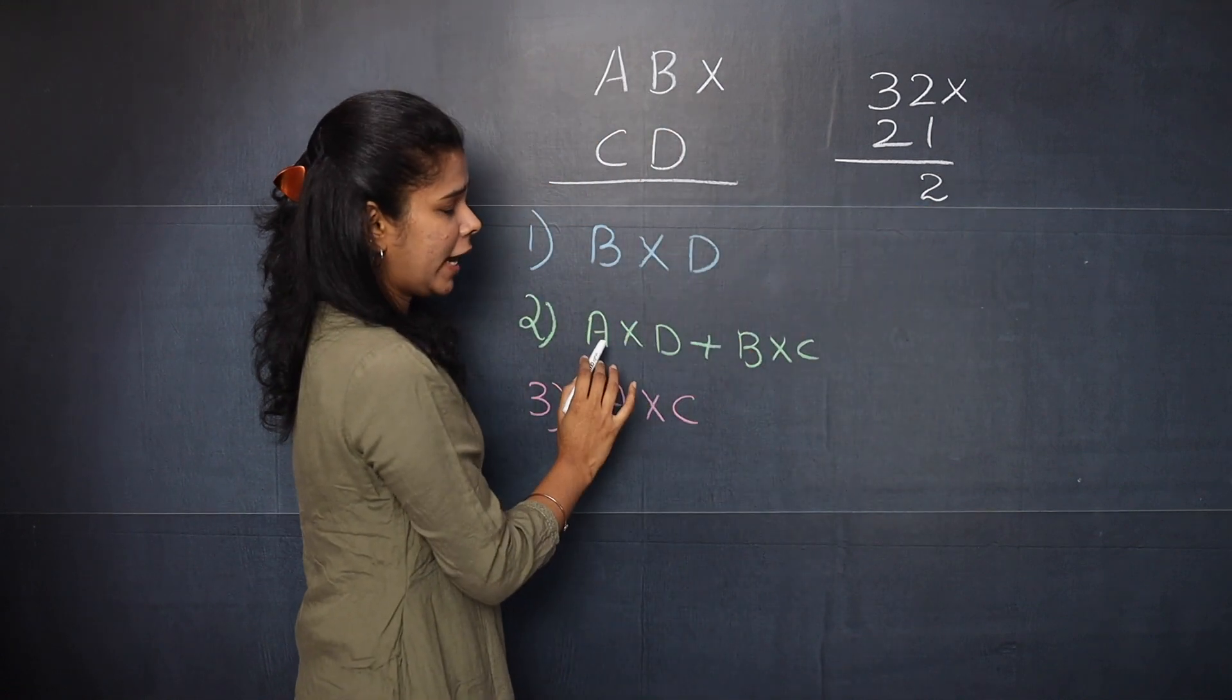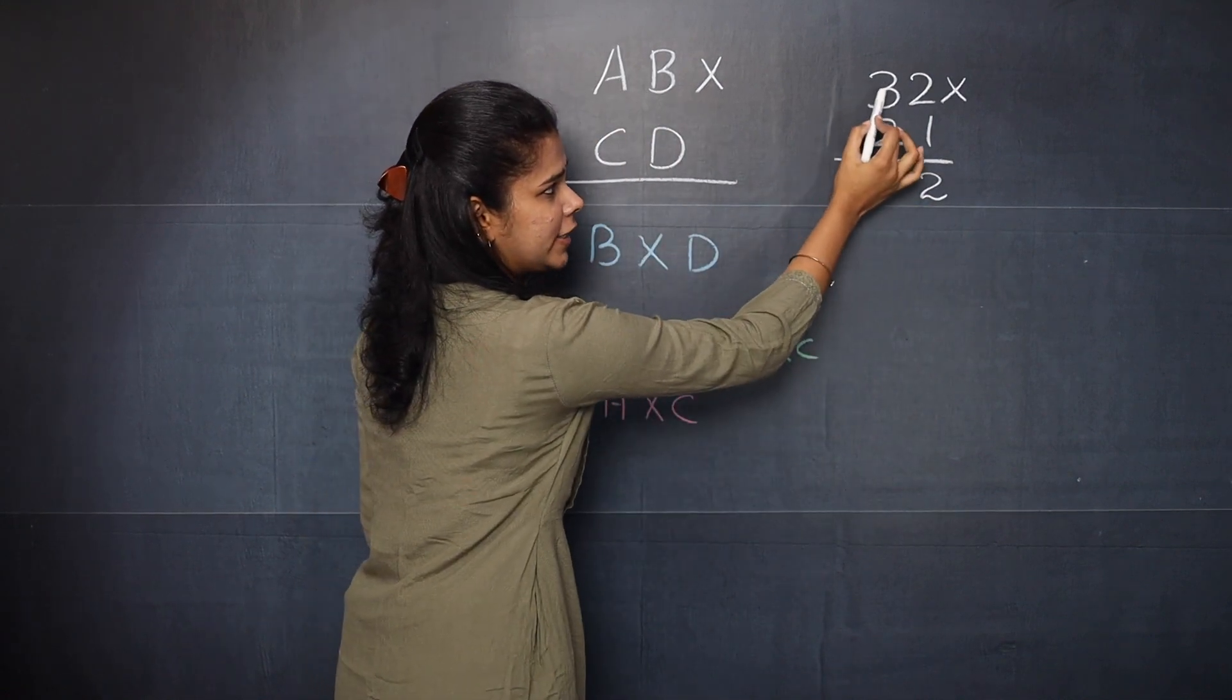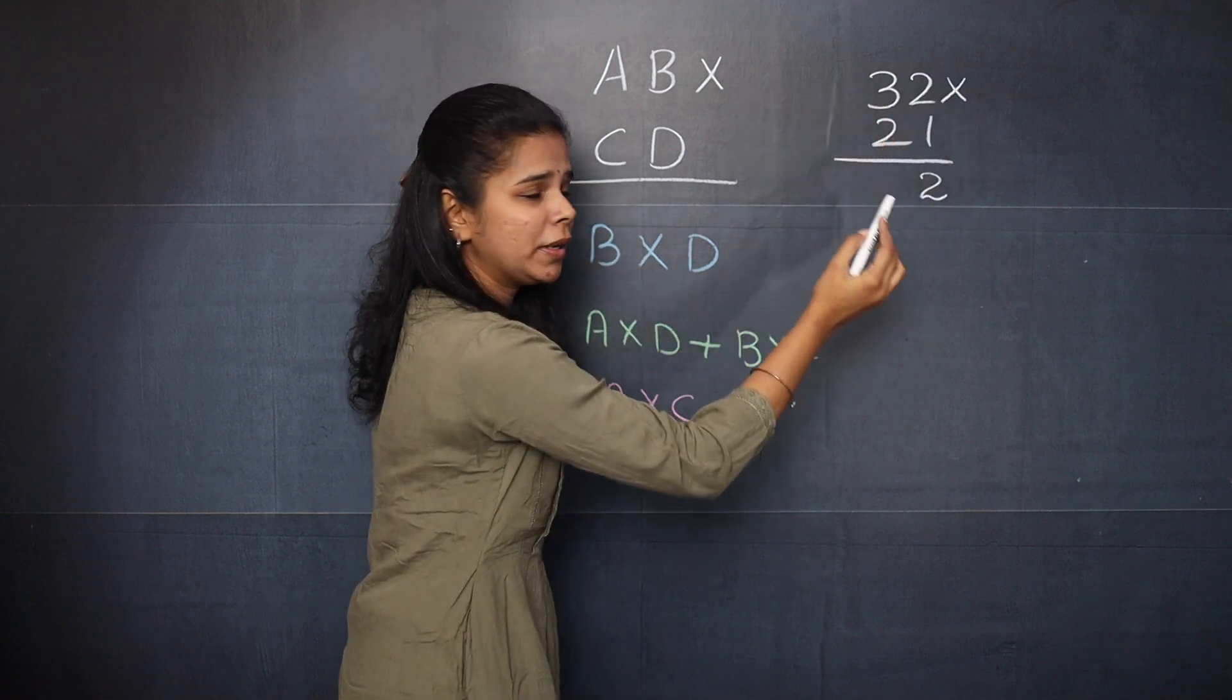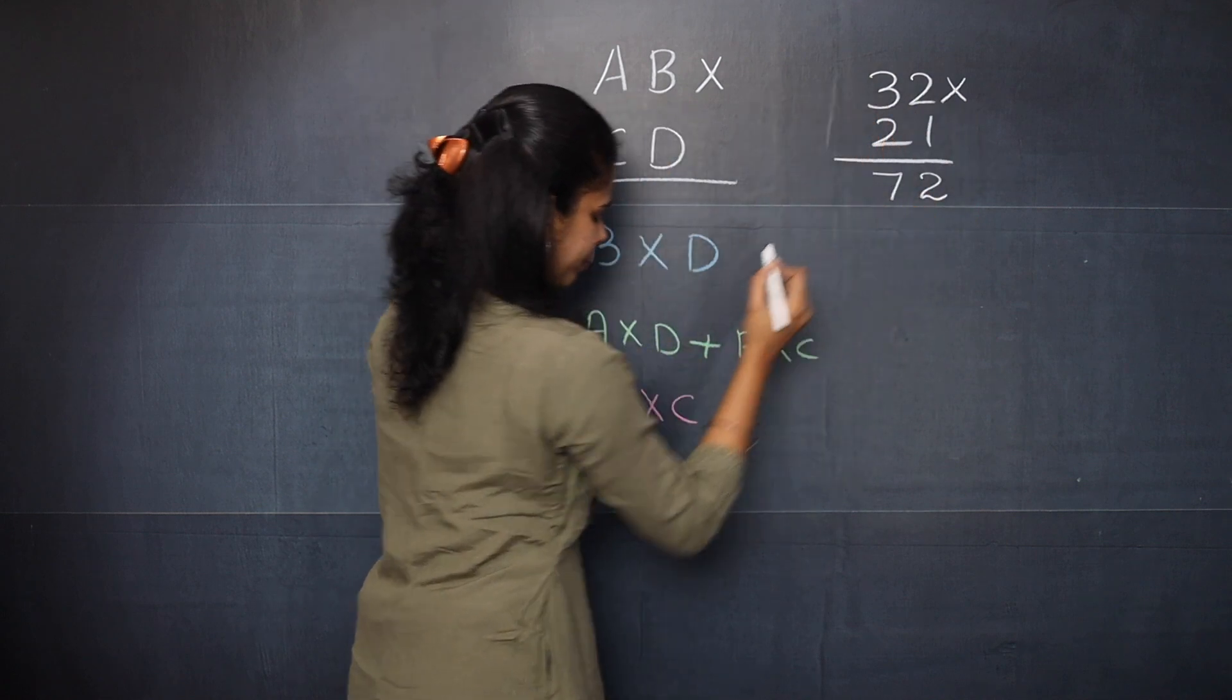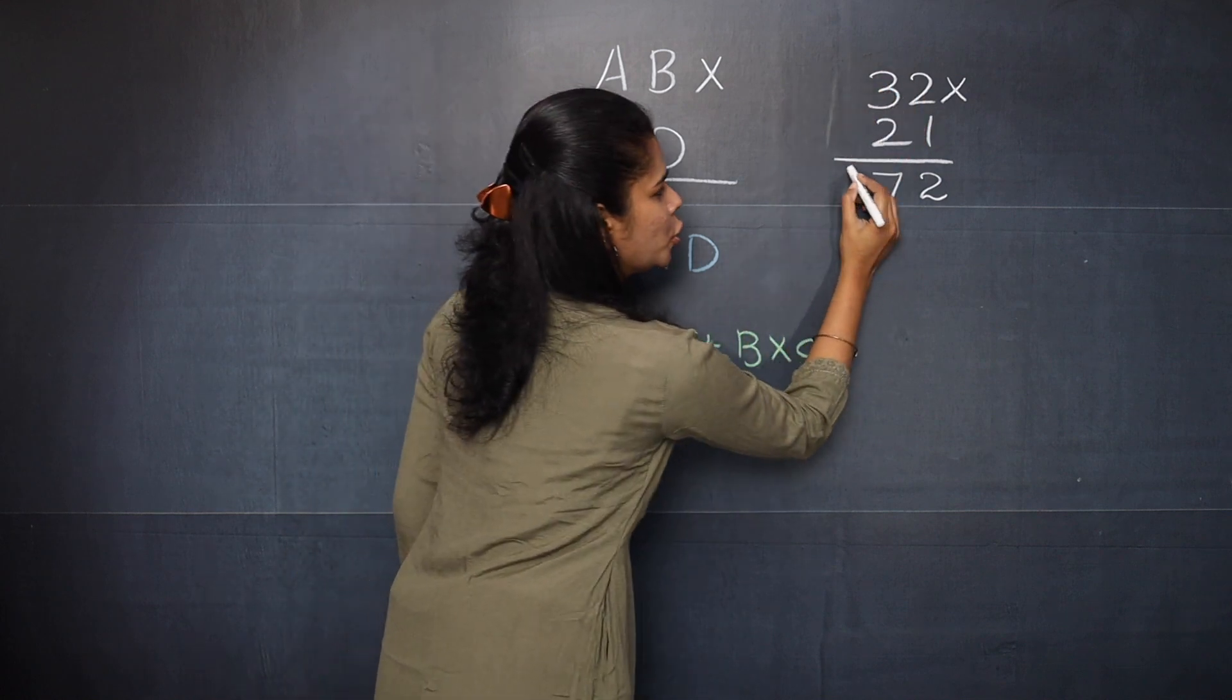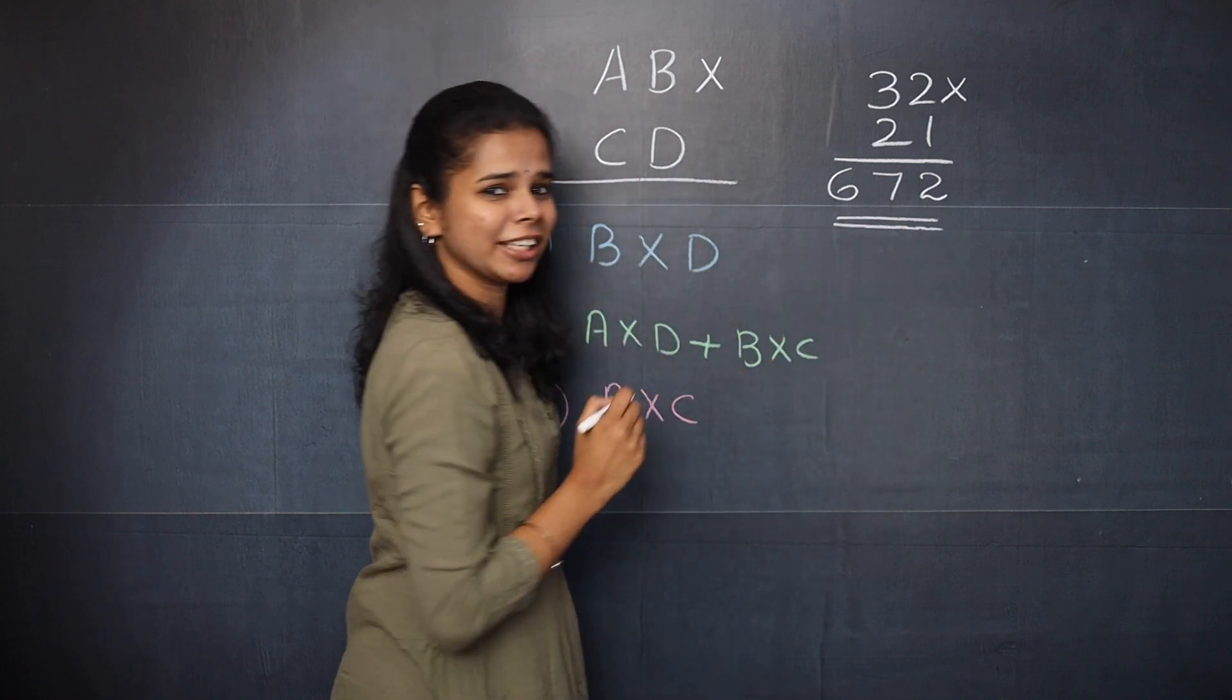The next step is that you need to cross multiply. That is 3 into 1, 3. Plus 2 into 2, 4. So 3 plus 4 is 7. The last step is that you need to multiply 3 and 2. So you will get 6 and that is your answer.